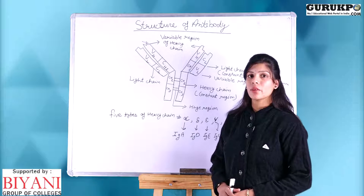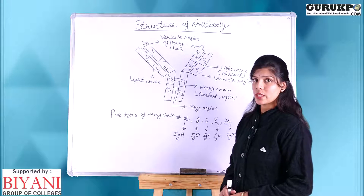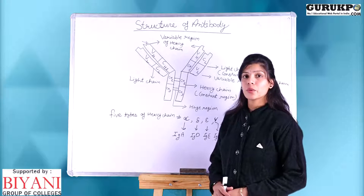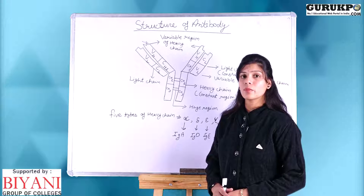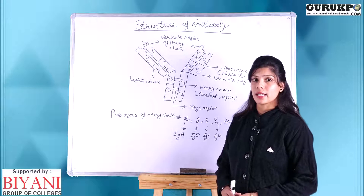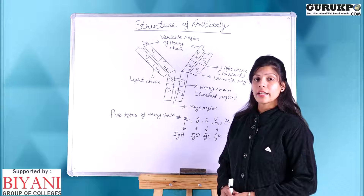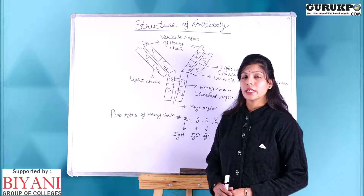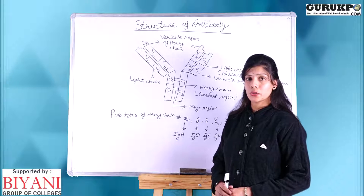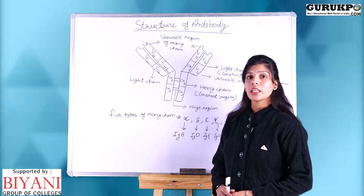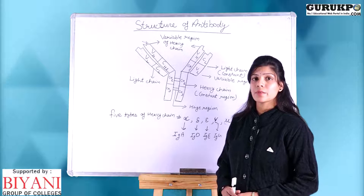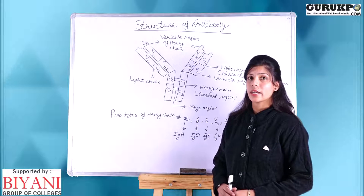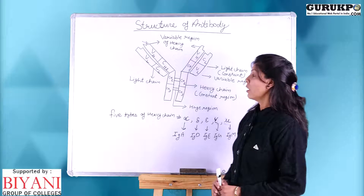First of all I will explain you what antibodies are. Antibodies are glycoproteins that are formed by the specialized lymphoid cells. The detailed structure of antibody has been given by Porter in 1962. When an immunoglobulin reacts with a specific antigen, then it is called as an antibody molecule.